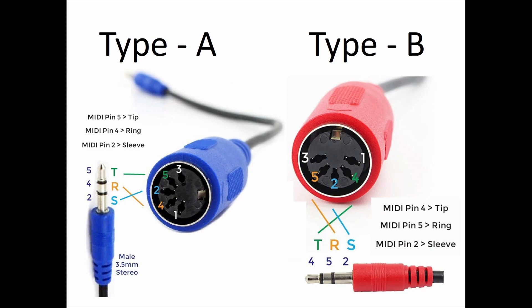When you go to buy an adapter, recognize that there are two different styles — there's a Type A and a Type B, and they're not compatible. The difference is that the wiring configuration from the tip, ring, and sleeve of the TRS connector routes out to different pins on the 5-pin DIN connectors.